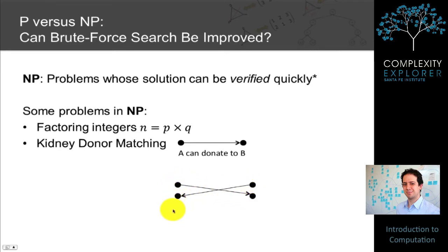The computational problem is: given a database with maybe thousands of people, some in couples and some not, is there a set of swaps that will save at least a thousand lives? Why is this problem in NP? If I show you the thousand swaps, it's very easy to check: were these valid swaps? Did a thousand different people receive kidneys? Did no one receive more than one kidney? Did no one donate more than one kidney? Those are very easy to check, so this problem is in NP.